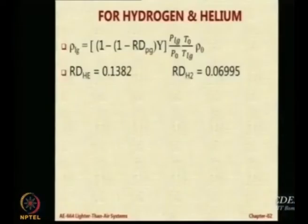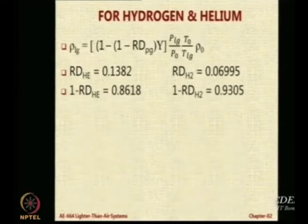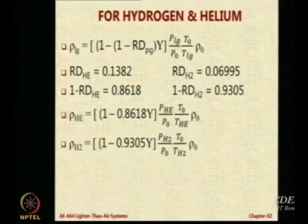The value of Y will be inside the formula. For your information, the relative density of helium is 0.1382 and of hydrogen is 0.6995 compared to air. So two simple formulae result for calculating the density of helium gas and the density of hydrogen gas.